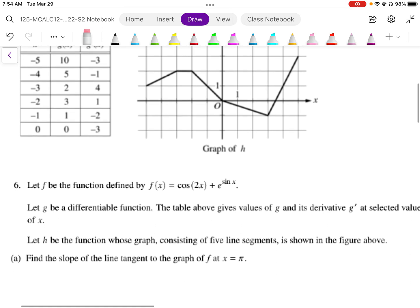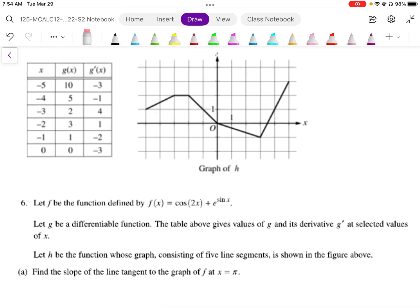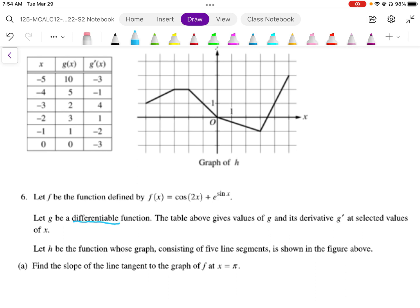So it says here that we have a function G, H. G is in the table, H is in the graph, and F is the expression. And it says G is a differentiable function and that's going to be key because this implies that it is smooth and continuous. The table above gives values of G and G prime at selected values of X and H is the five line segments given.